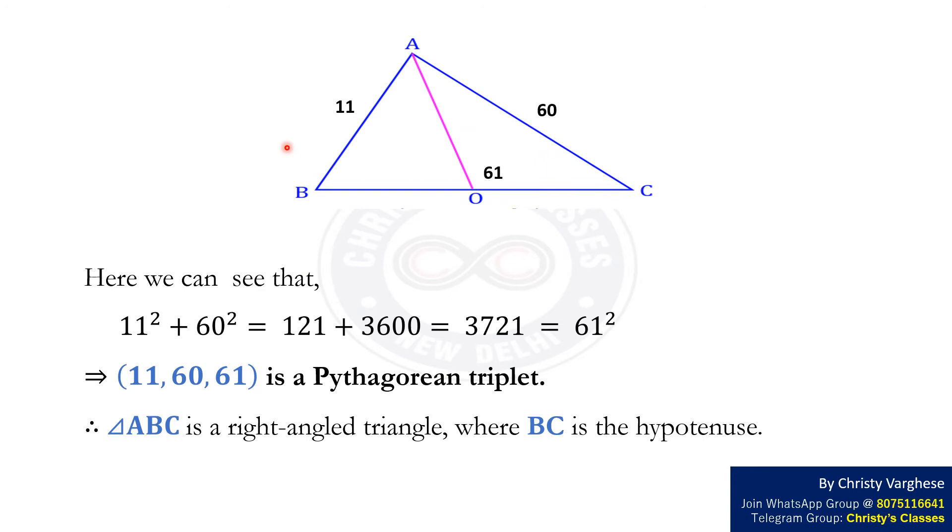In the given figure, we can see that 11 square plus 60 square equals 121 plus 3600. This equals 3721 which is 61 square.